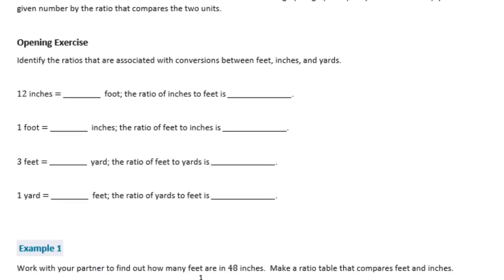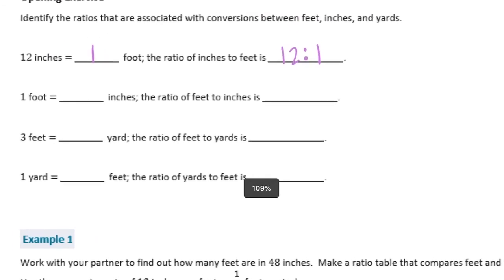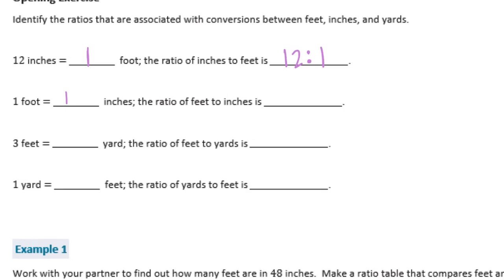So let's go back to the opening exercise. It says, identify the ratios that are associated with conversions between feet, inches, and yards. So 12 inches is equal to 1 foot. So then our ratio, the ratio of inches to feet would be 12 to 1. 1 foot, so this is just flipping it, 1 foot is equal to how many inches? 1 foot is 12 inches. So the ratio of feet to inches is 1 to 12.